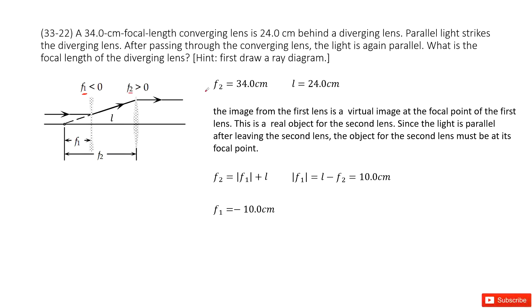The given quantity gives us F2, the 34 cm, and L, that is the distance between these two lenses is 24 cm. This is the given quantity. Now you need to find F1.